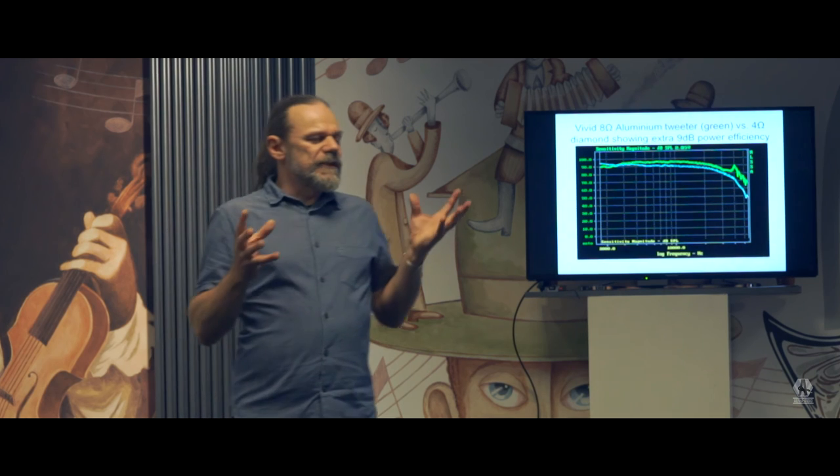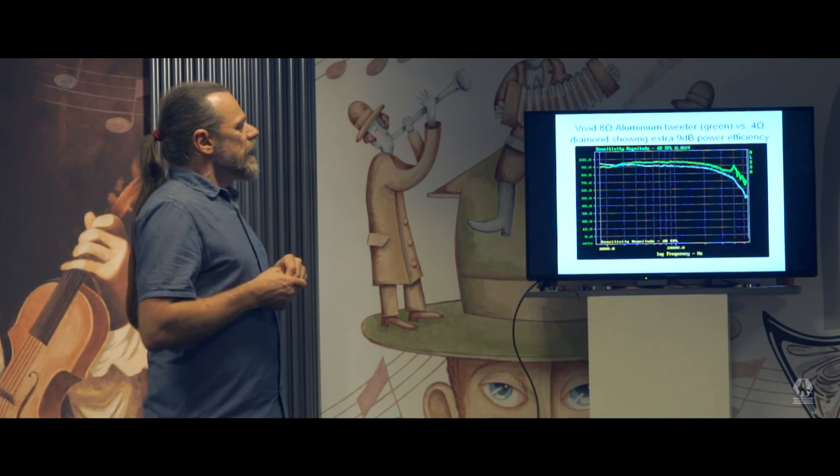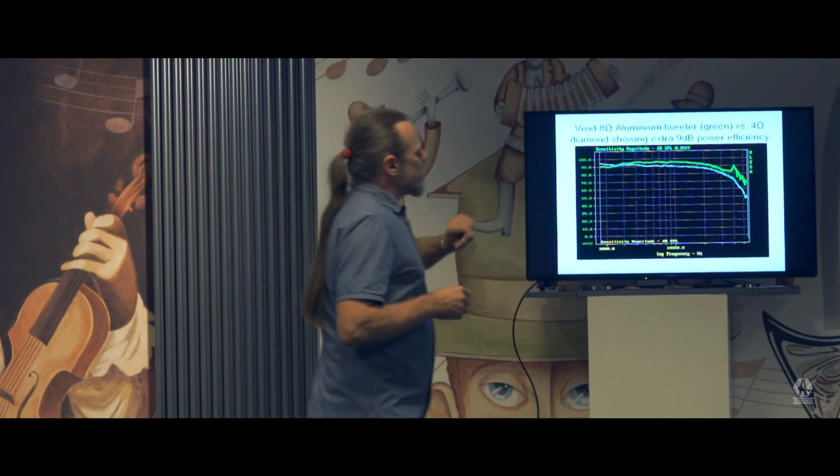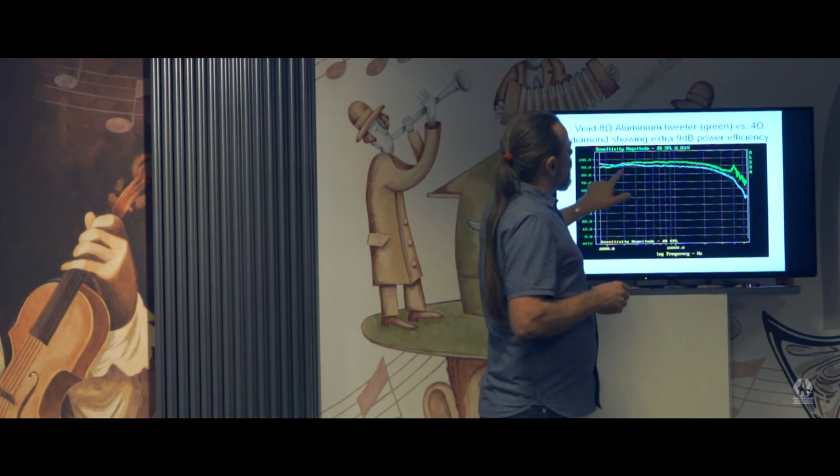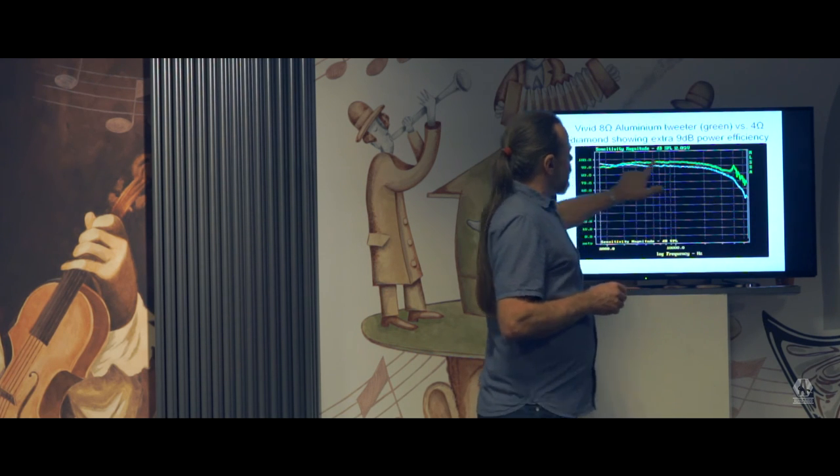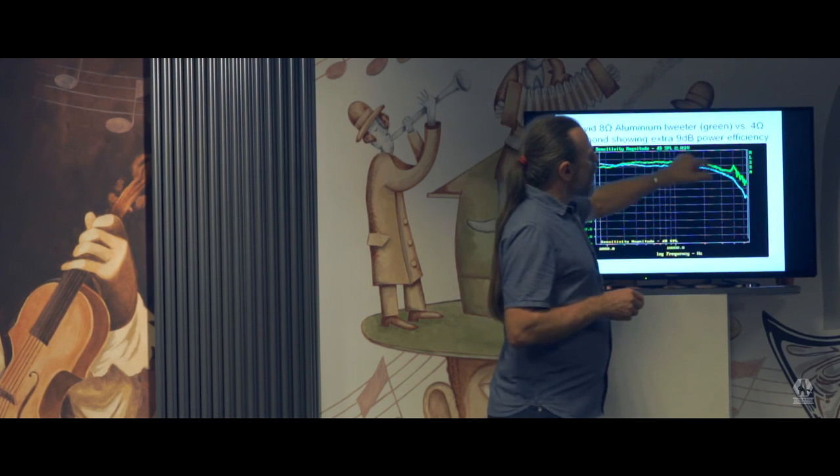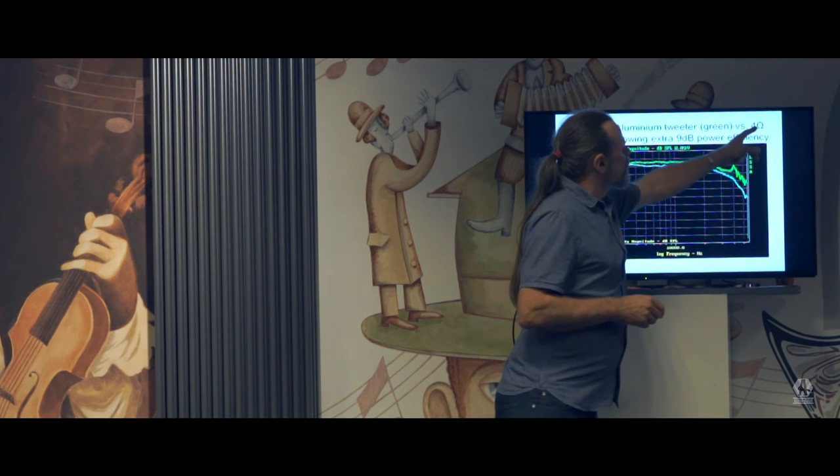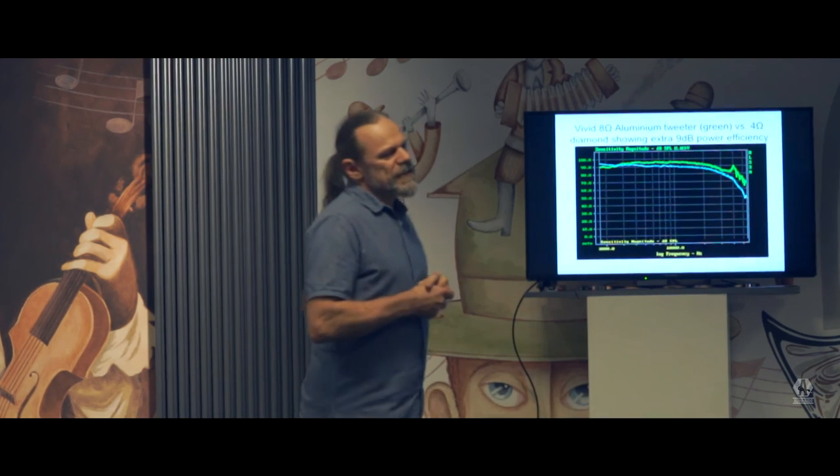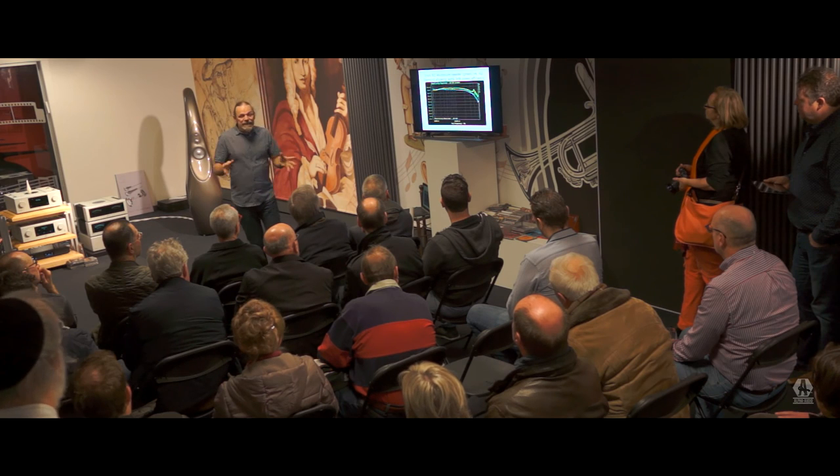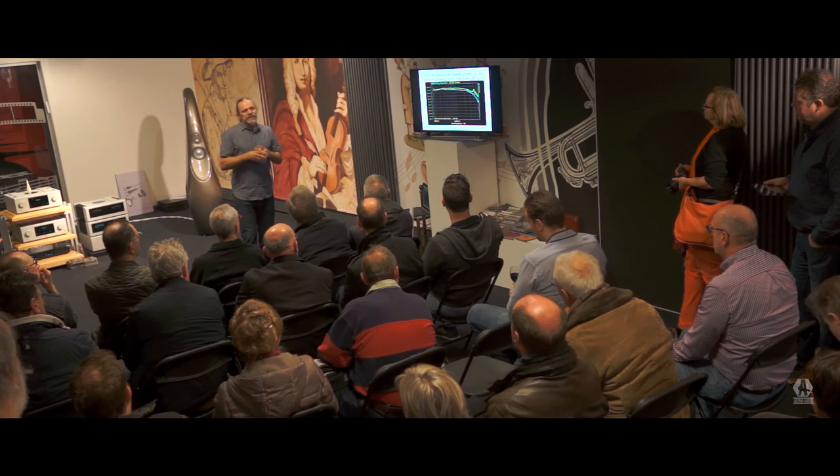The upshot of being able to get so much more flux into our magnetic gaps means that we get a much more efficient driver. This particular example, this is the Vivid Audio B26 at the top, and this is a well-known diamond tweeter. And you can see there's about 6 decibels of difference here. But actually, there's another 3 decibels hidden away because the diamond tweeter is 4 ohm and ours is 8. So that's 9 dB of extra efficiency from the Vivid tweeter. 9 dB is the very difference we're looking for. It makes the difference between a domestic loudspeaker and a studio monitor.